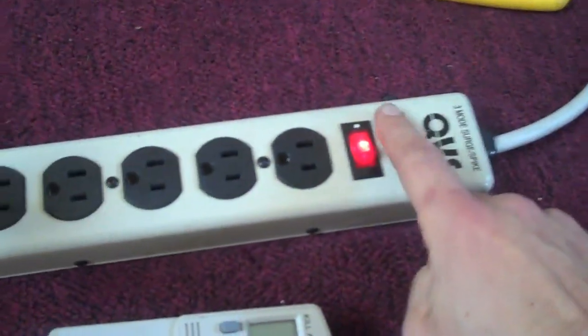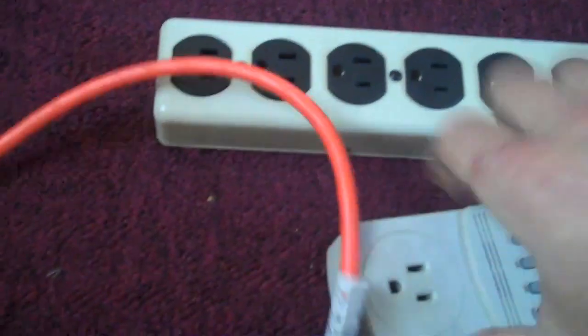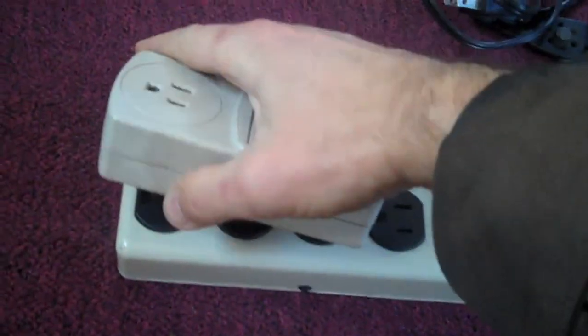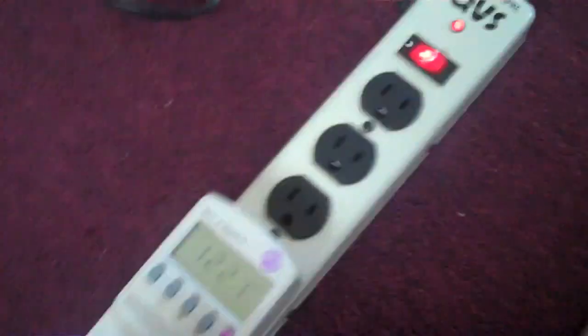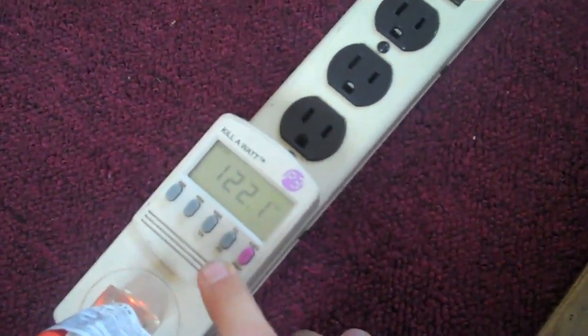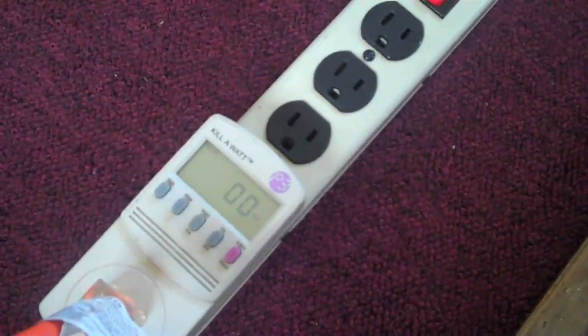So right now you can see I got my power indicator right here in the plug. I'm just going to unplug this, plug in the kill-a-watt, plug this back in, wait just a second. Okay, we're at 120 volts AC. Give it a moment for